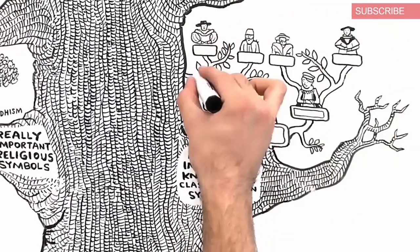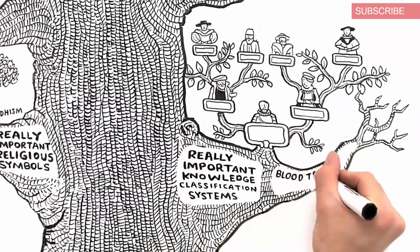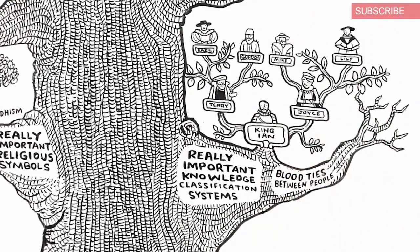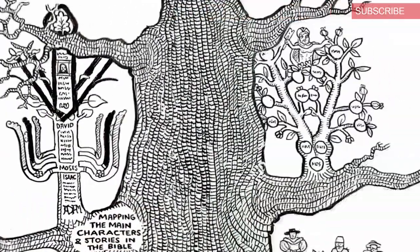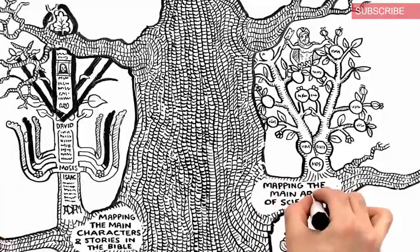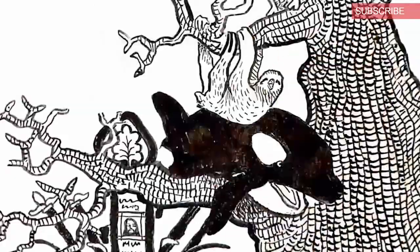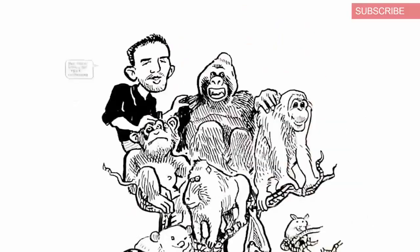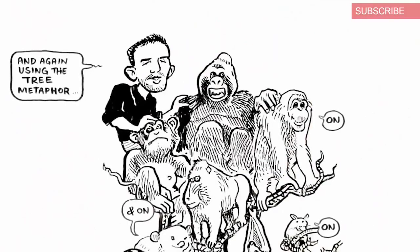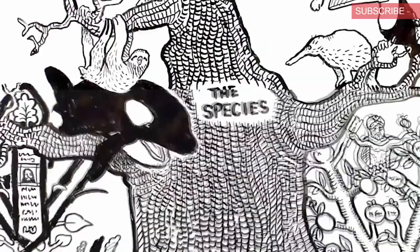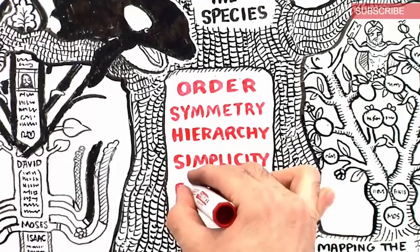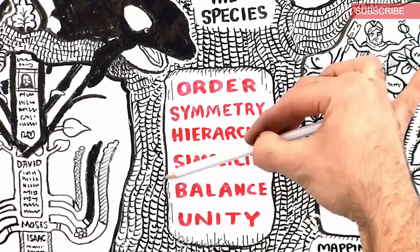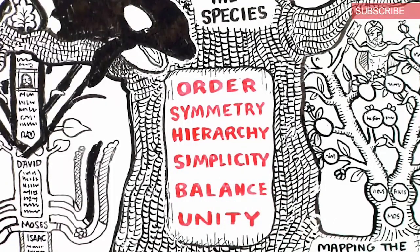But even more than religious symbols, trees have been important knowledge classification systems throughout the ages — mapping the blood ties between people, mapping the main characters and stories told in the Bible, mapping the main areas of science, and even mapping the various species on the planet. This widespread metaphor is so popular because it really expresses the human desire for order, symmetry, hierarchy, simplicity, balance and unity. Trees are really an embodiment of the simple way we like to look at the world.